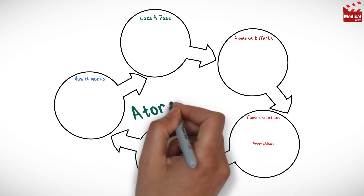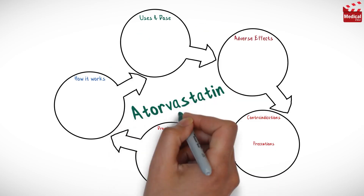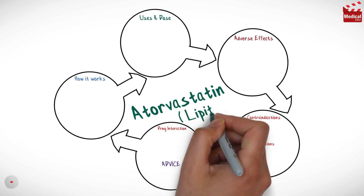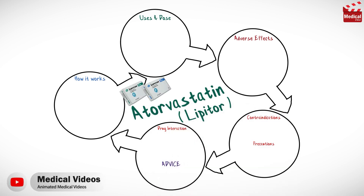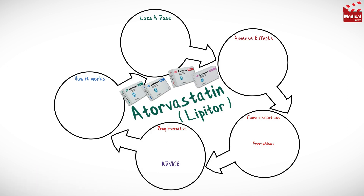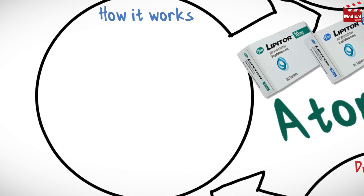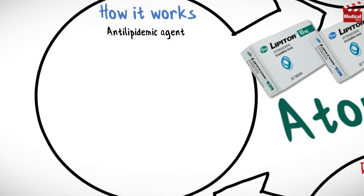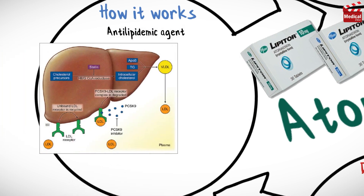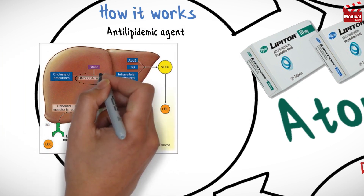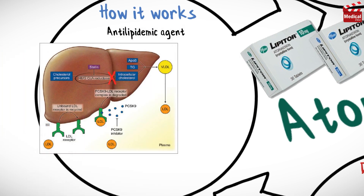In this video we'll briefly discuss what atorvastatin is, what it's used for, how it works, the dose and side effects, contraindications, and precautions. Atorvastatin is an antilipidemic agent that inhibits HMG-CoA reductase, which is the rate-limiting step for cholesterol formation in the liver.